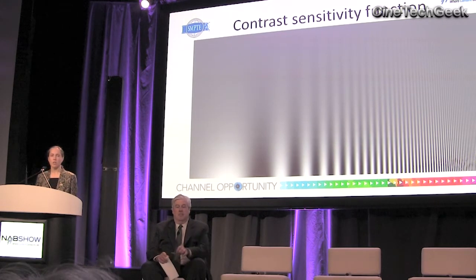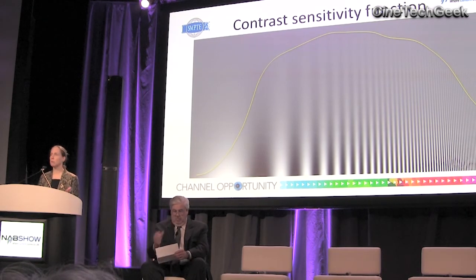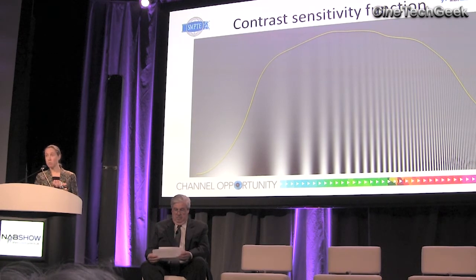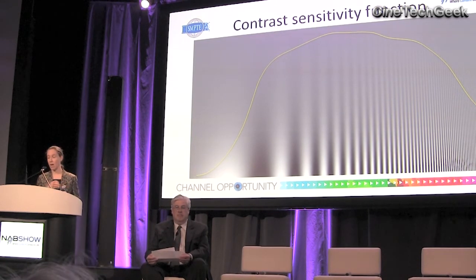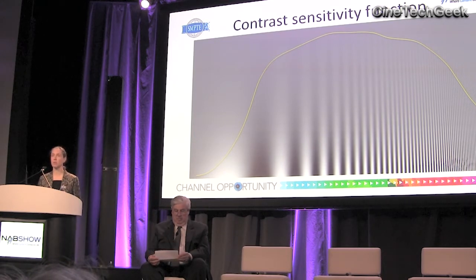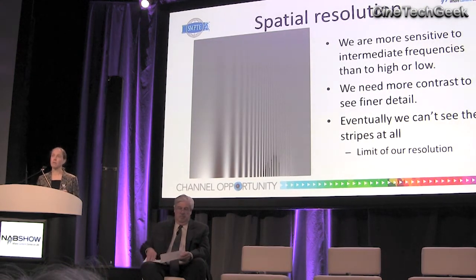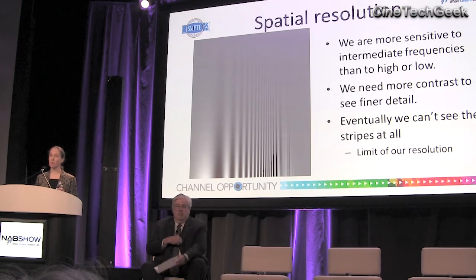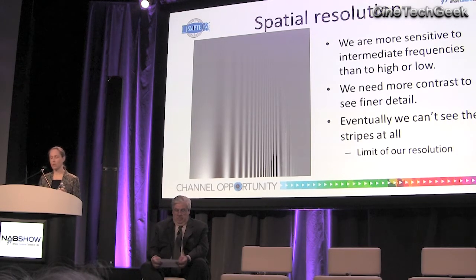If you look at that image and consider how far up the screen you can see the stripes, I imagine for most of you, you'd draw a line something like this. But that line is entirely in your own head. As far as the projector is concerned, it's displaying the same shades of gray in each horizontal line of the image — it's just that your visual system is more sensitive at some frequencies than others. Where we're less sensitive, we need more contrast to see that detail, and at high frequencies you find that eventually we can't see the stripes at all — they just appear as uniform gray. That's the limit of our resolution.